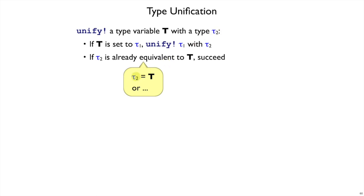Note also that tau2 doesn't have to be exactly T. It might be that tau2 equals T3 as a type variable, and we've already decided that T3 is equal to T. In this case also, there's no new information. Even though tau2 was not exactly T, if we have decided that T3 is T, then we need to succeed immediately.